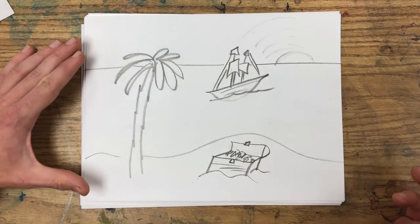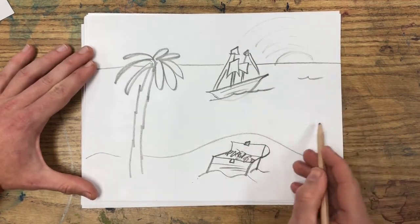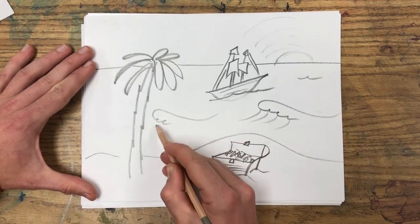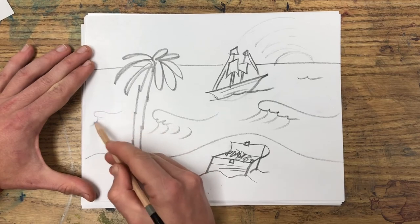Then you could put the sun on that horizon line, have a setting sun. You could put some details and waves on the surface of the water.